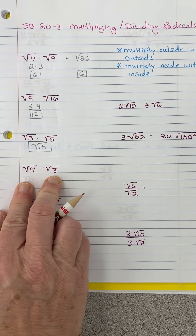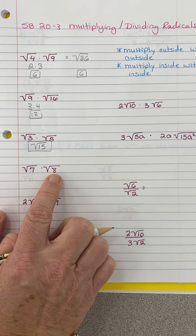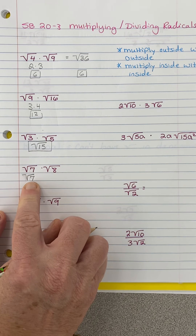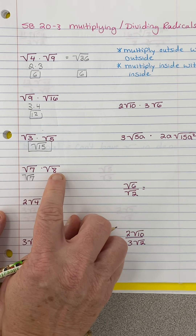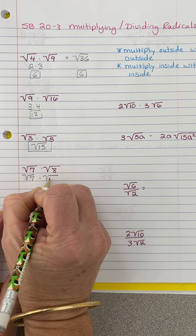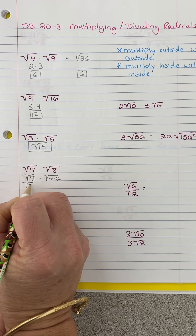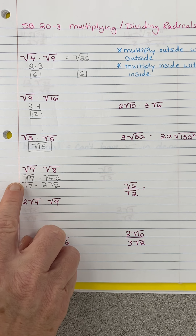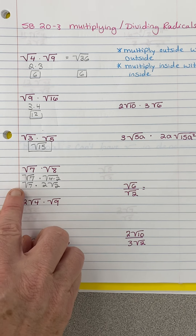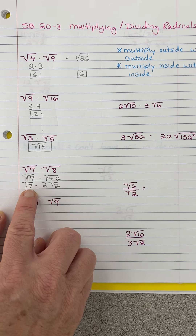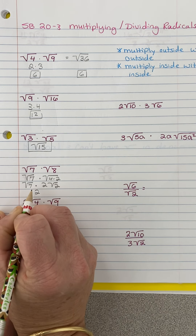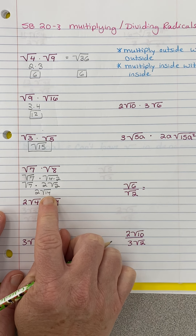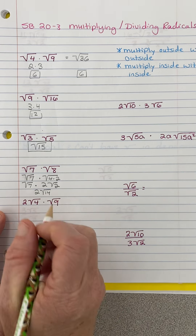Same thing here — we can decide to simplify first or multiply and then simplify. I like to simplify first, so I'm going to keep that radical 7 there because there's no perfect square that goes into that. 4 goes into 8, so I'm going to say 4 times 2. So I have radical 7 times 2 radical 2. Now I multiply outsides by outsides — there's nothing here so think of it like a 1, like you have 1 radical 7. So 1 times 2 is 2, and 7 times 2 is 14. Is there a perfect square that goes into 14? 4 — no. 9 — no. We are good.